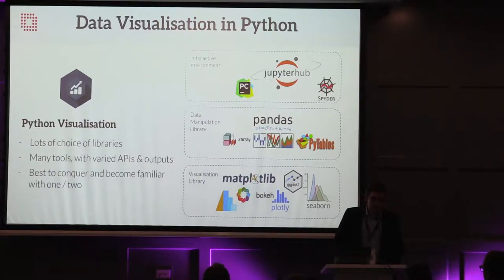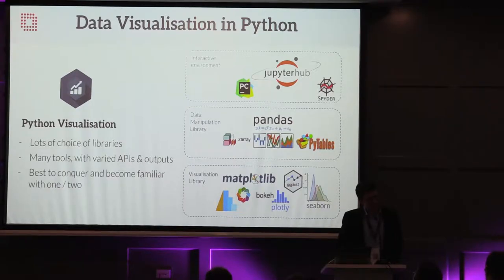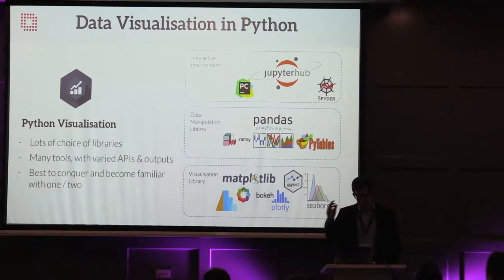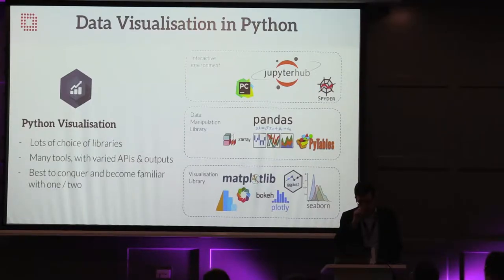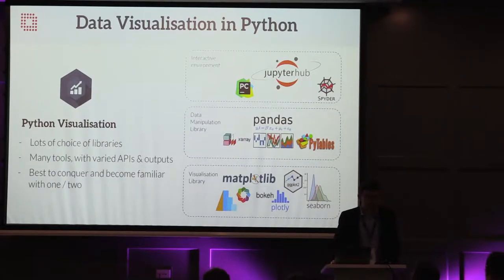There's nothing really that uniform in Python. The good news is there's loads of choice, and the bad news is there's loads of choice. Because of so many libraries, they all are really good and really bad in different ways. The task quickly becomes: what are you going to use and how are you going to use it? You can probably get away with conquering about two libraries and you'll have a good toolset.